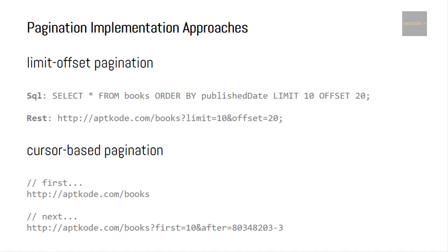Let's consider the implementation of these pagination UX approaches. Under the hood we have two approaches: the first one is limit-offset pagination, and the second one is cursor-based pagination. Limit-offset pagination is somewhat traditional and we can implement it in SQL. The query looks like: SELECT these things FROM books ORDER BY publish_date, with a LIMIT of 10 and an OFFSET of 20 — meaning we start from the 20th index to get 10 books. We can convert that into query parameters with a limit parameter and an offset parameter.